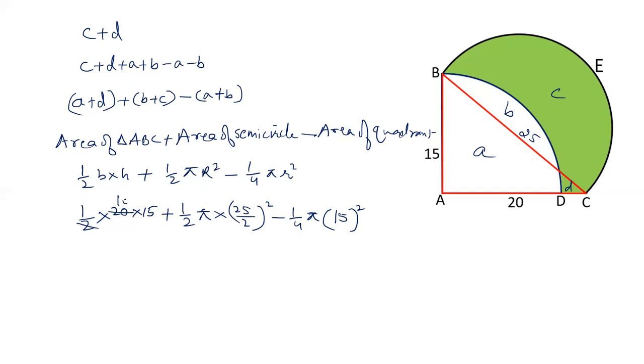This is cancelled out. So, 10 into 15 is 150 plus 1 by 2 pi 625 by 4 minus 1 by 4 pi 225.